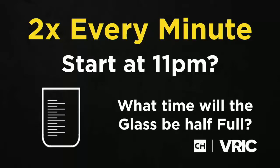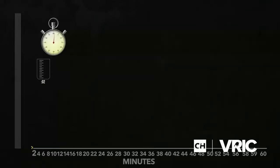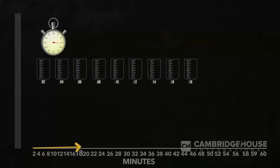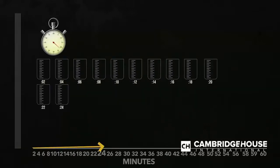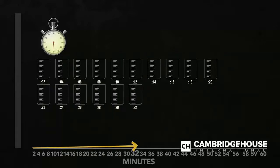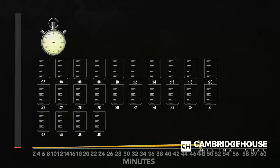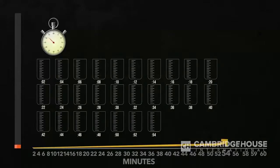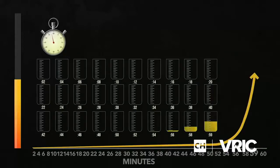The average person on the street guesses 11:30 p.m. Notice that for the first 55 minutes of the experiment, we don't see anything at all inside the glass. The deadly bacteria are too small. We don't recognize exponential growth because we can't see it. It's only at five minutes to midnight that we notice anything, and it isn't until one minute to midnight that we realize the glass is half full.